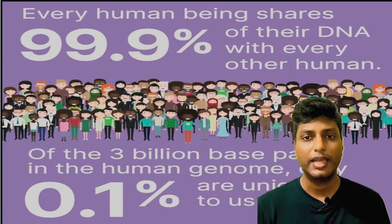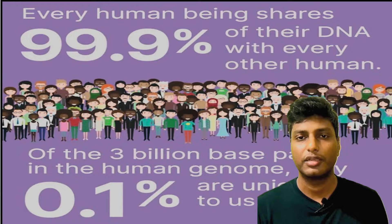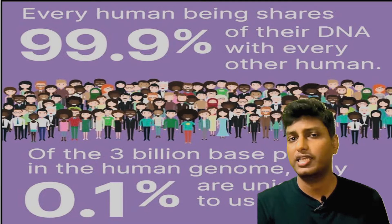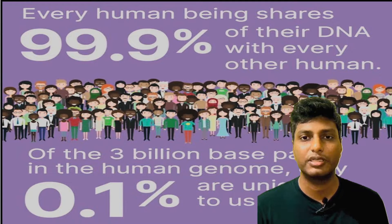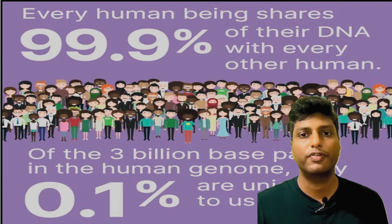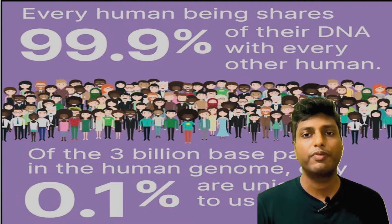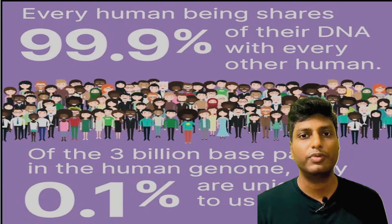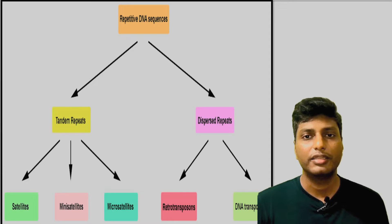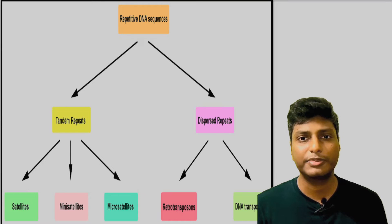What is the specialty of satellite DNA? 99.9 percent of the DNA of every individual is the same — that means your DNA, my DNA, our parents' DNA is exactly 99.9 percent the same. Only 0.1 percent of each person's DNA is different. This 0.1 percent is nothing but the satellite DNA, which is different in each one of us.